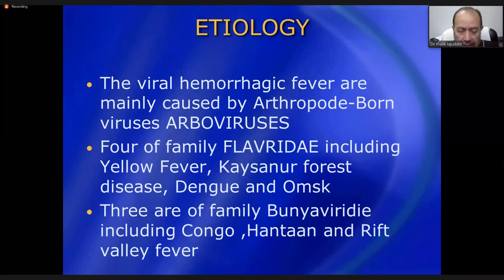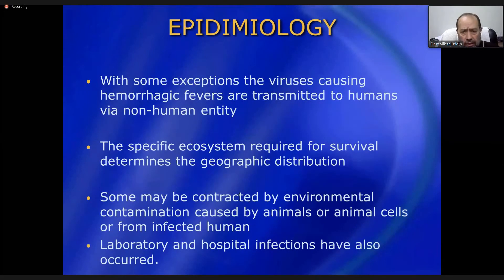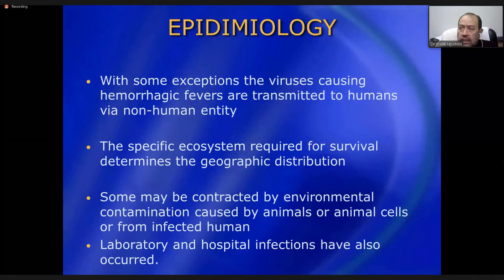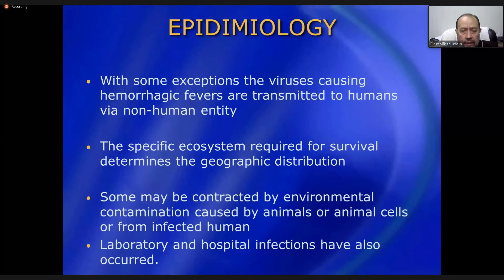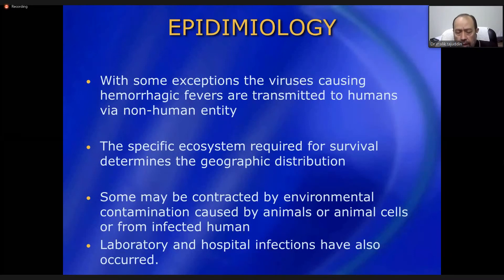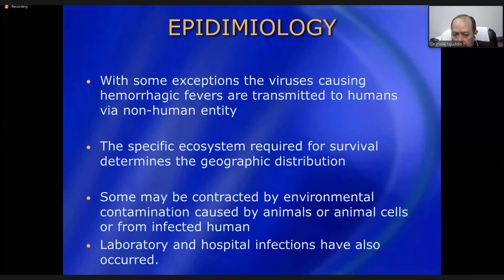Three from the family Bunyaviridae include Crimean-Congo hemorrhagic fever (CCHF), Hantaan, and Rift Valley fever. With some exceptions, all these viruses cause hemorrhagic fevers and are transmitted to humans via non-human entities — some through mosquitoes, some with reservoirs in animals like sheep, cows, buffaloes, ostriches, rodents, and ticks. Once transmitted to humans, they can be propagated from human to human. A specific ecosystem is required for survival, which determines the geographic distribution of each disease.